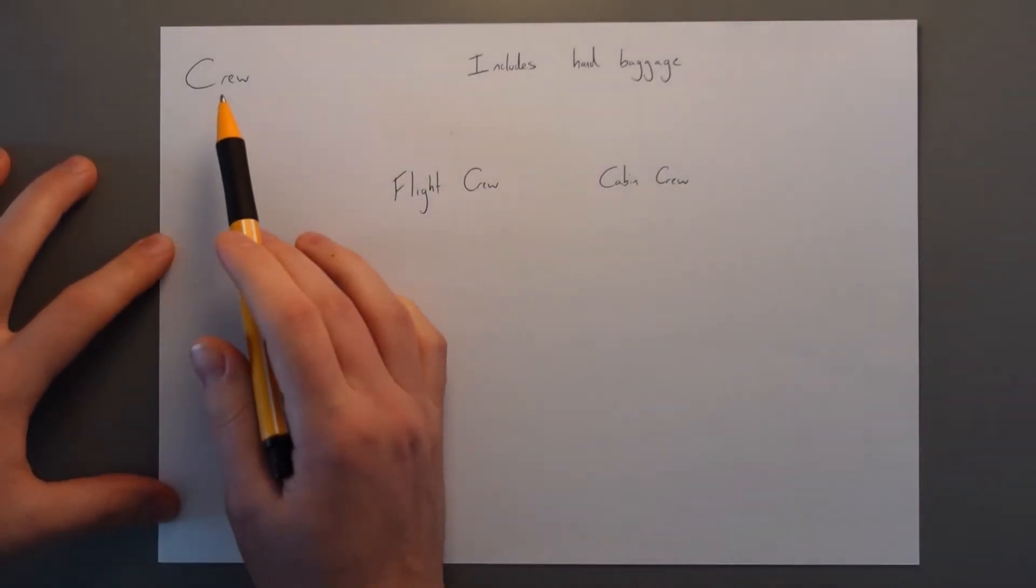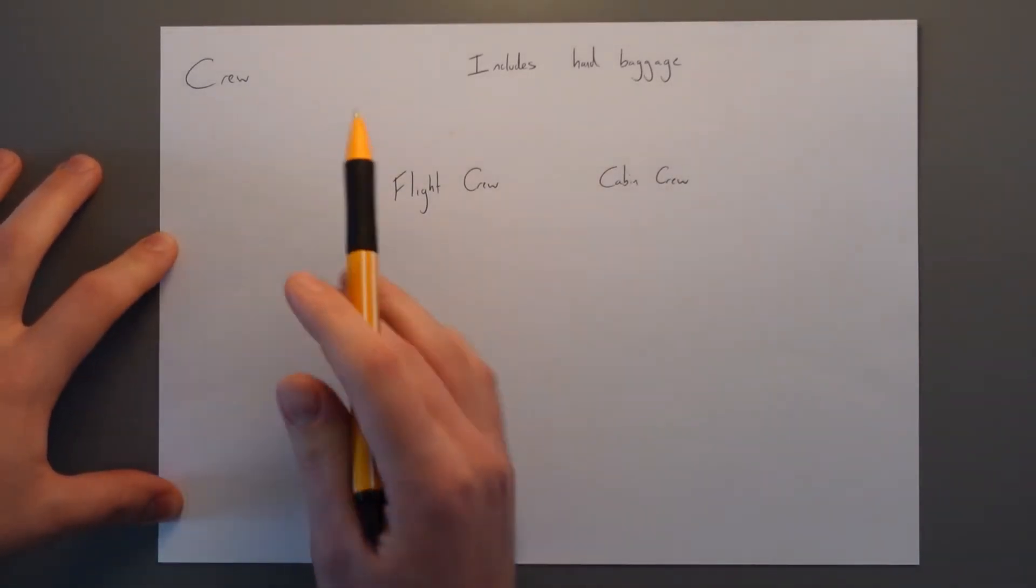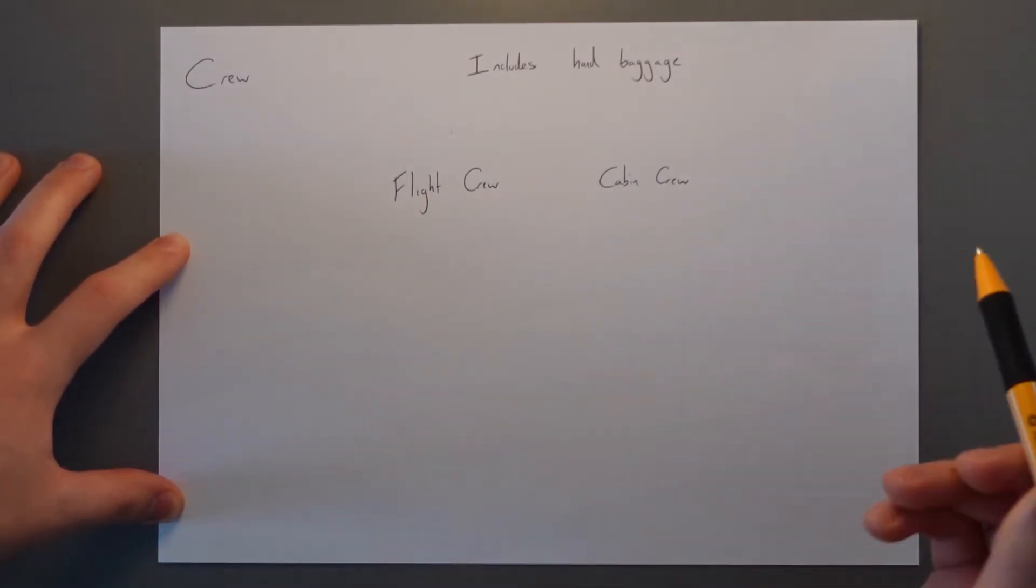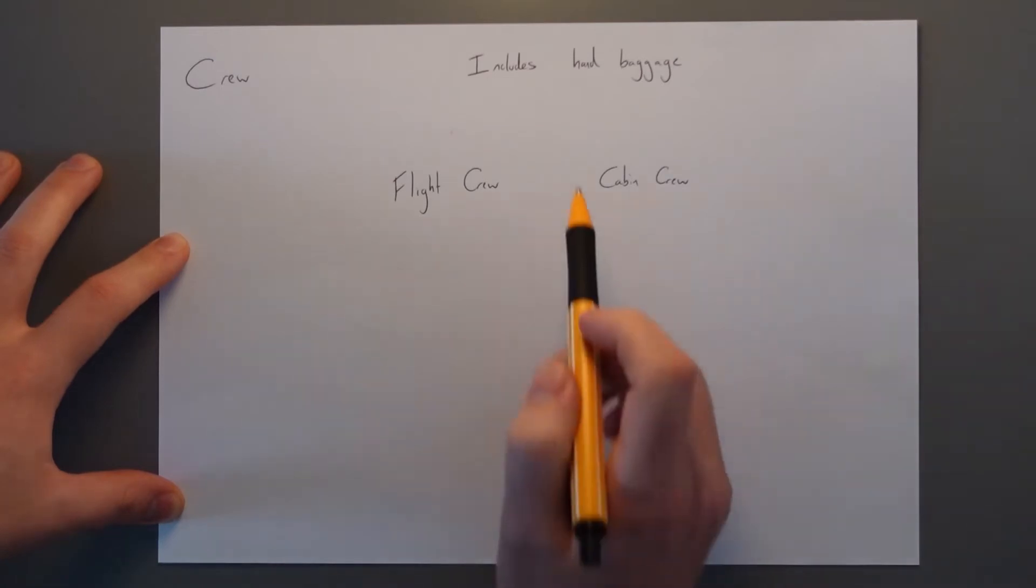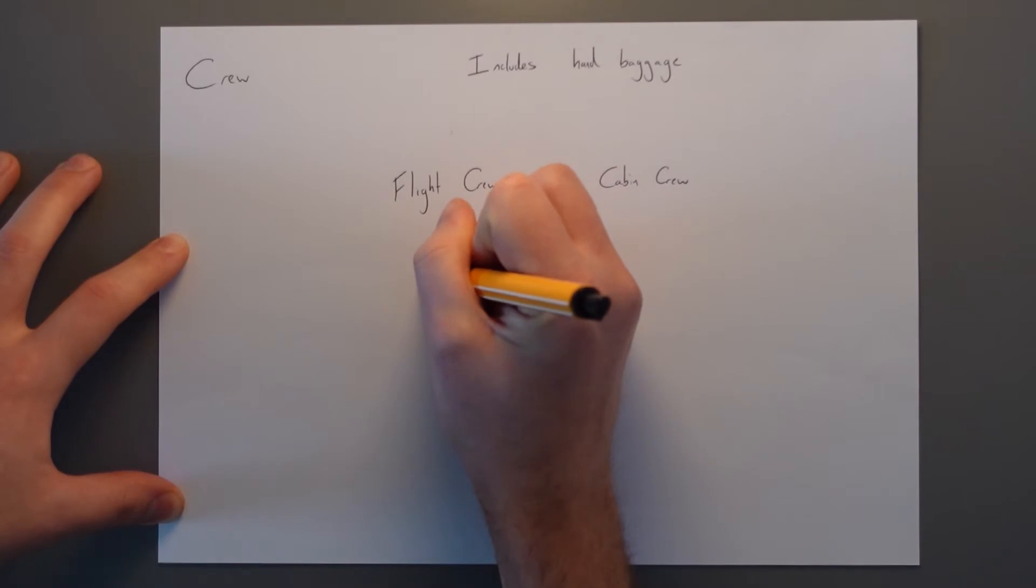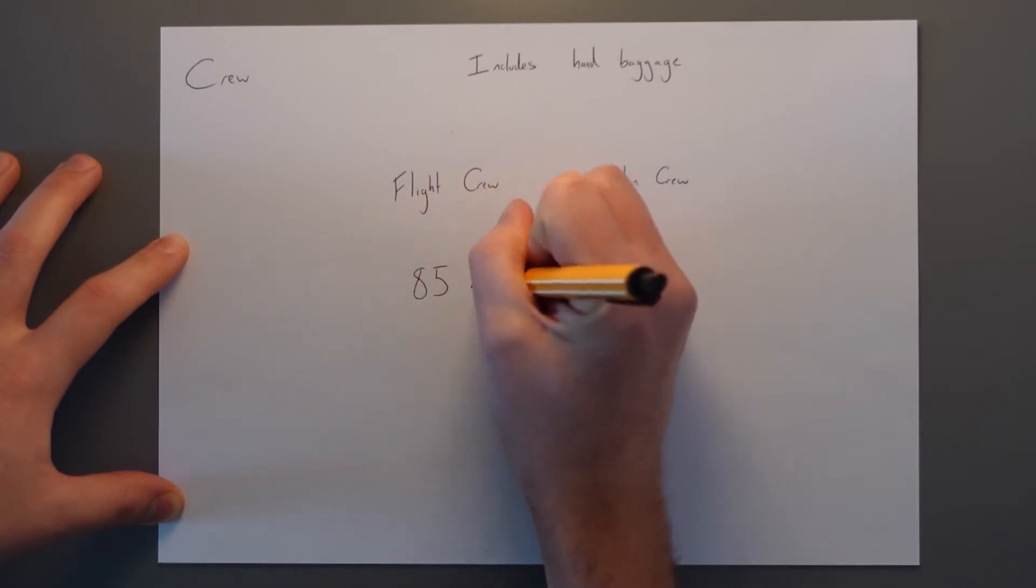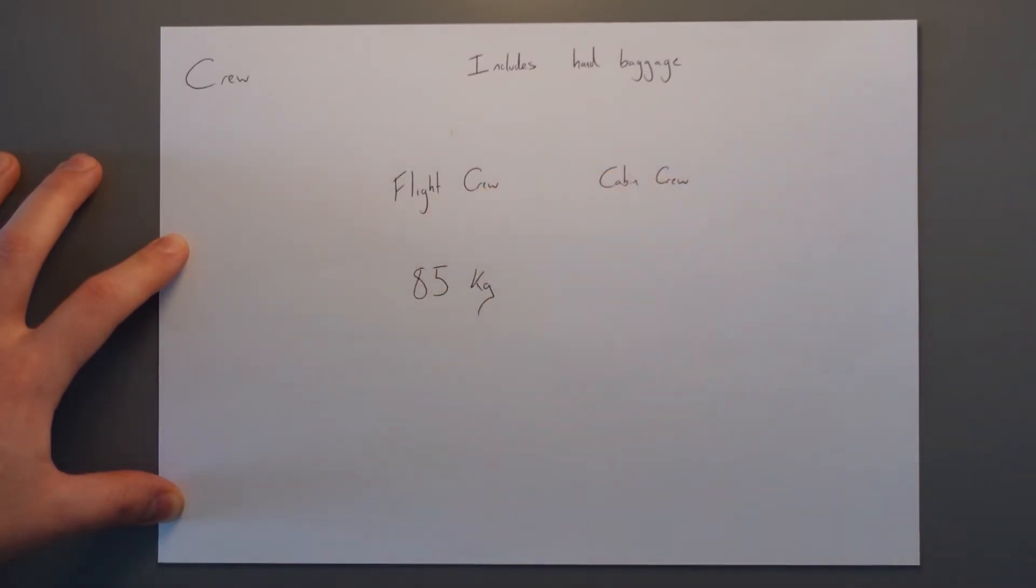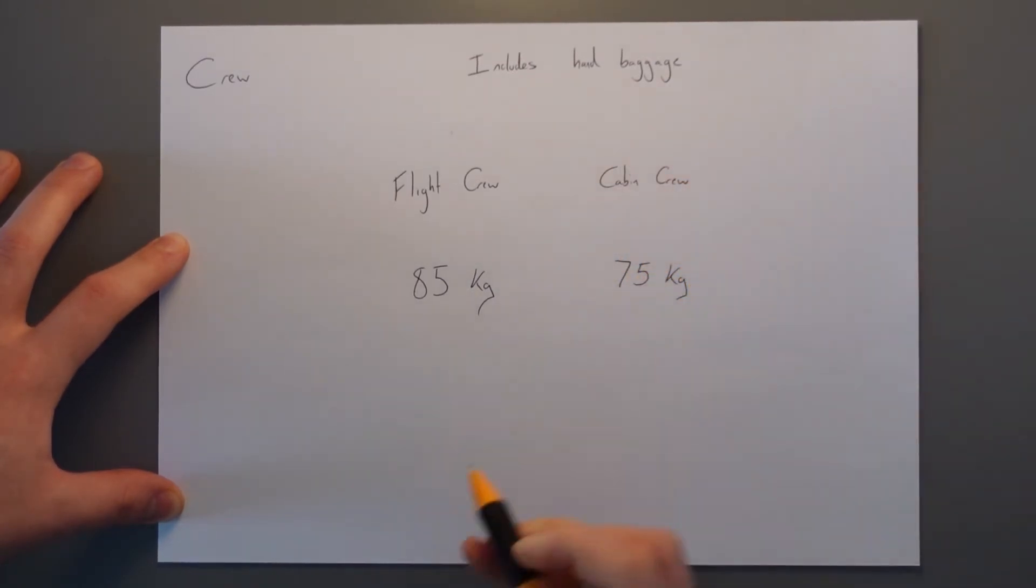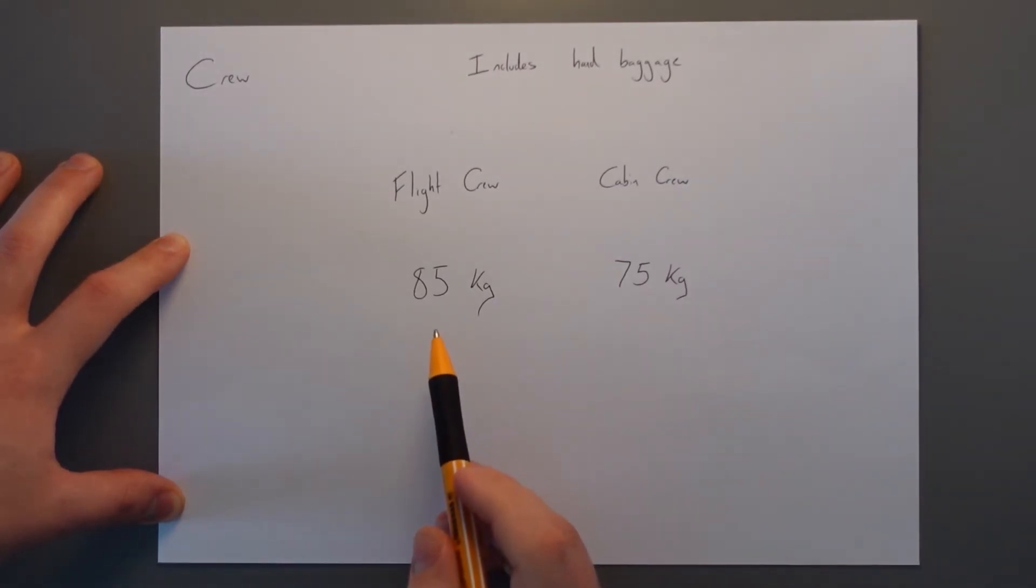So for crew, we can either use the standard masses or we can actually weigh people. We can do either or. There's no restrictions. And any weights that we do include any hand baggage that we take on with us. So for flight crew, our standard mass is 85 kilograms and for cabin crew, it is 75 kilograms. This is mainly due to the old rules for having to carry all the physical manuals and things like headsets and stuff like that. That's why there is the big difference between the two.